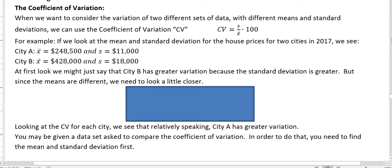At first look, we might say City B has greater variation because the standard deviation is greater. In general, we do associate greater variation with greater standard deviation, but that's when we have the same mean, same units, and basically the same type of sample set.